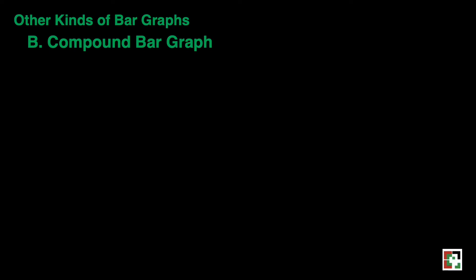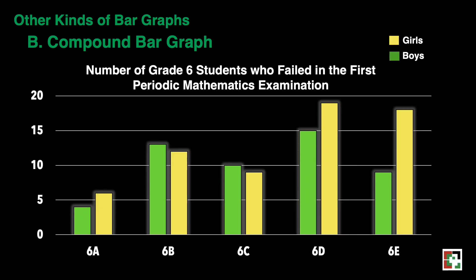Another kind of bar graph is a compound bar graph. I have here a table entitled Number of Grade 6 Students Who Failed in the First Periodic Mathematics Examination. We have the classes 6A, 6B, 6C, 6D, and 6E. The yellow ones are girls and the green ones are boys. Based on the compound bar graph, we can interpret the following. First, more girls failed in mathematics examination than boys in grade 6A, 6D, and 6E classes.